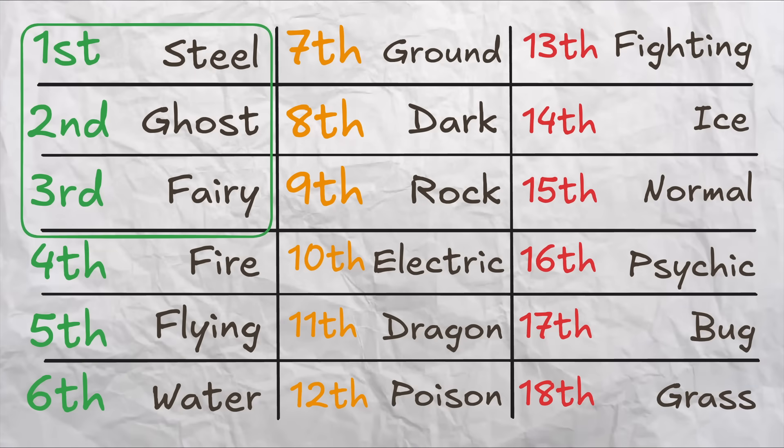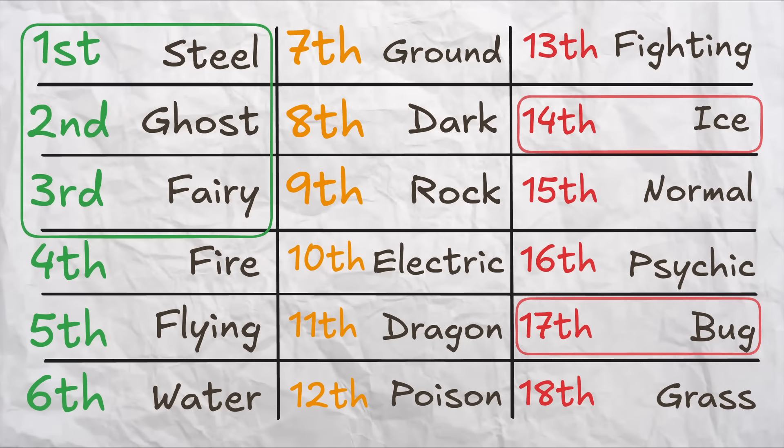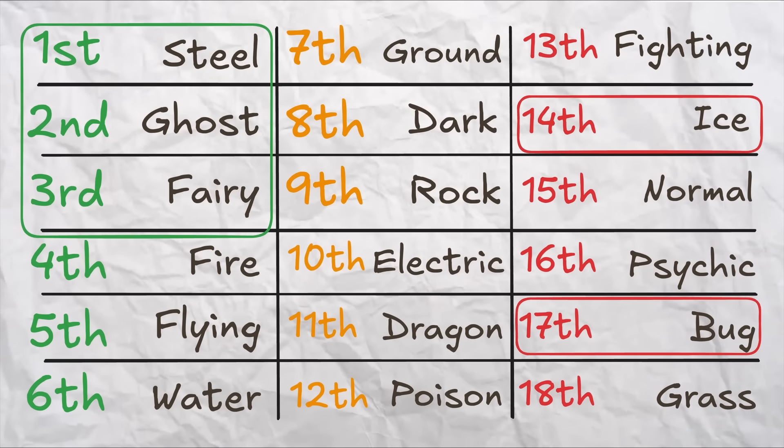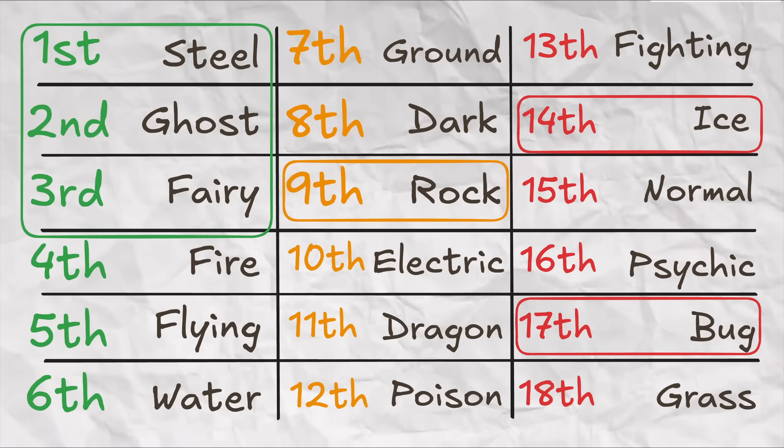Steel and Fairy are near the top where they belong, interestingly with Ghost sharing that status. Bug and Ice are near the bottom, which makes a lot of sense, although with Rock kind of still in the middle of the pack, likely due to its many offensive advantages.